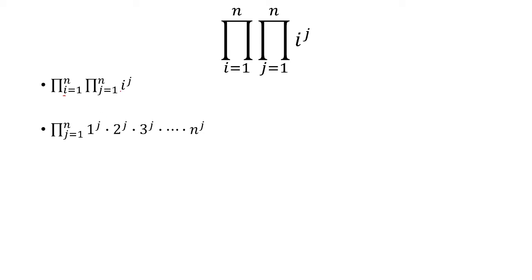Let's have i go from 1 to n. Instead of i to the j, we have 1 to the j, 2 to the j, all the way up to n to the j. Now the outside product is finished, so let's work on the inside product. The inside product is from j equals 1 to n.